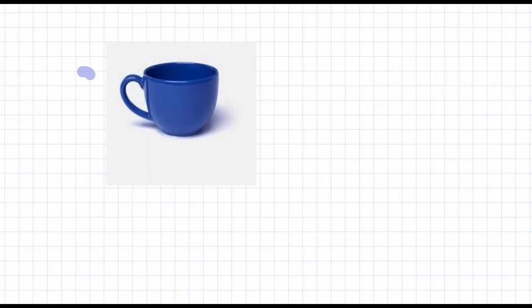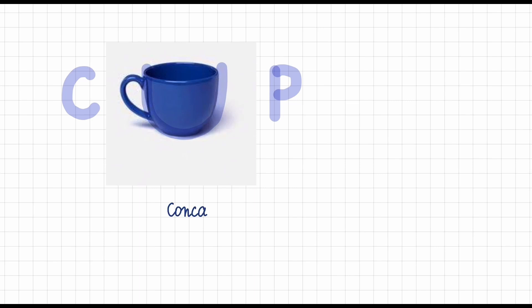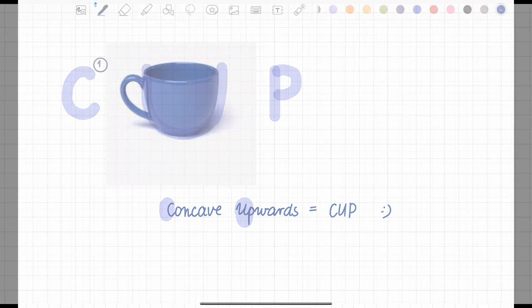There is also a tip for those of you who have problems remembering things. The graph of a function which is concave up reminds you of a cup in its shape, as you can see here. And when you write down the words 'concave upwards', the highlighted letters create the word 'cup'. So it's easy to remember.